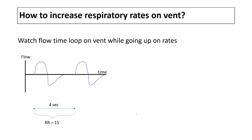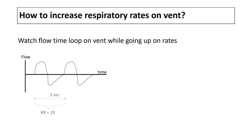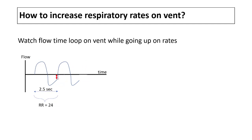The most important thing when changing the respiratory rate is to watch the flow-time loop on the ventilator. For example, if at rate 15 the flow reaches zero, you can increase the rate to 20 and the flow will still reach zero — ensuring complete exhalation with no auto-PEEP. However, if you increase the rate further and the flow no longer reaches zero, some air is being trapped.